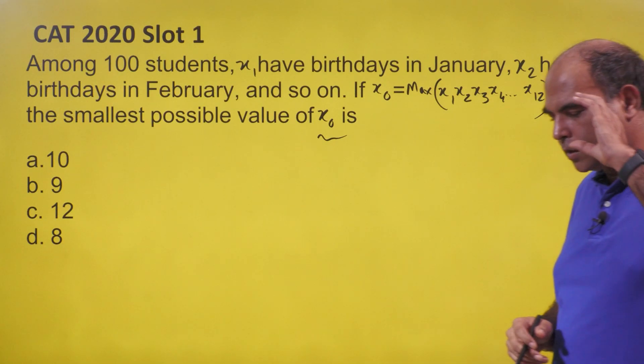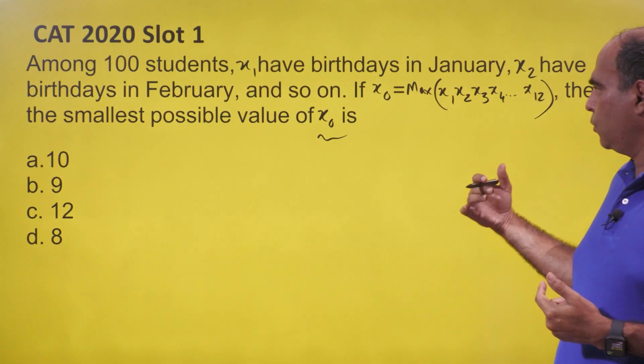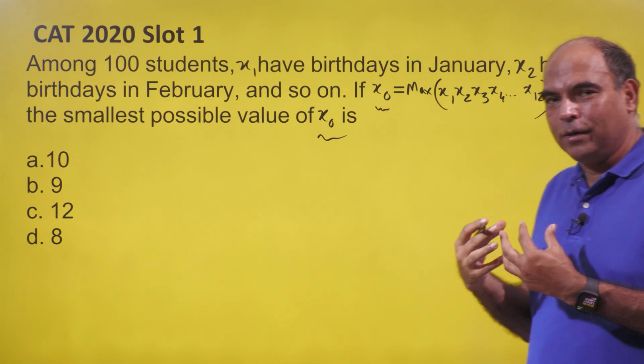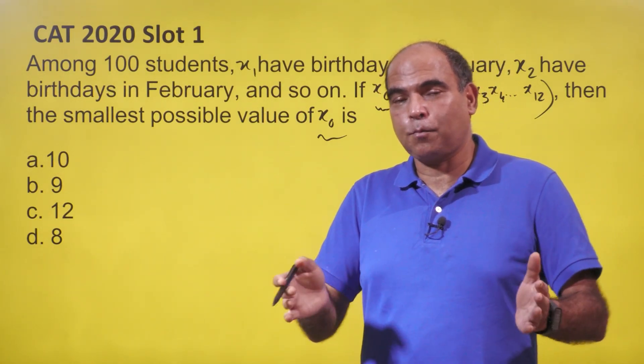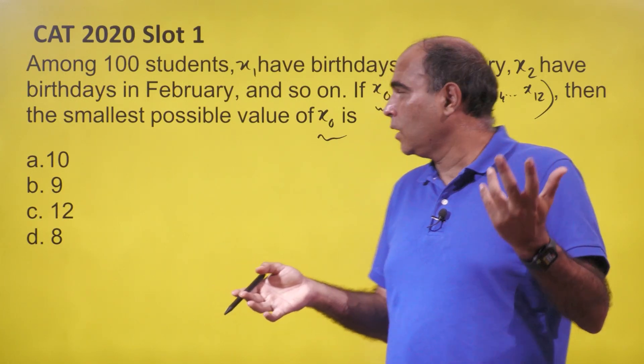To solve this, you need to think one thing: if I have to minimize x₀, I need to distribute these 100 students as equally as possible among the 12 months - their birthdays distributed as equally as possible.